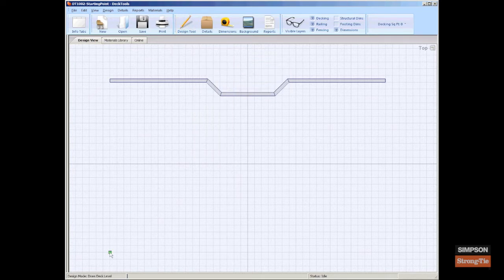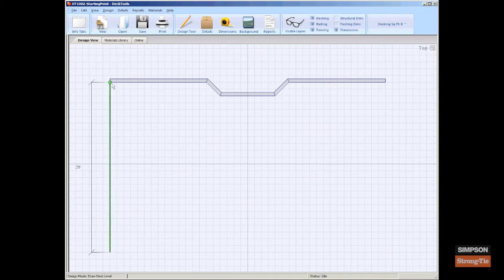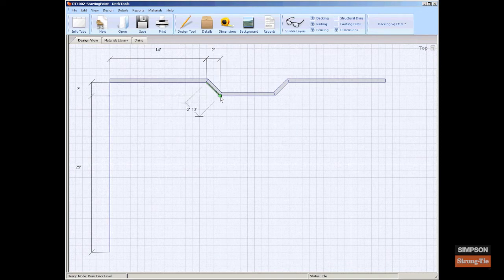Click a spot in the top view to create a start point for the deck. Continue to click spots to create the deck perimeter. Be sure to trace around any walls that are connected to your deck.